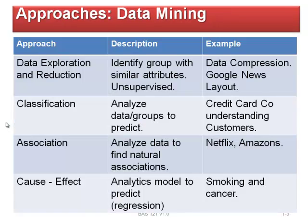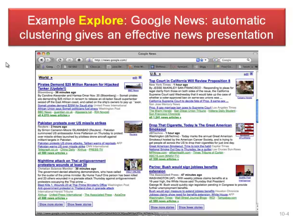Let's look at different approaches to data mining. The first approach is data exploration and reduction — we're exploring the data or finding ways to compress and reduce it. We're trying to identify groups with similar attributes. Normally it's putting the attributes on a grid, and the ones close to each other have similar attributes; we cluster them together. The ones far apart go in another cluster. It's called unsupervised because there's no dependent variable we're trying to solve. Examples include data compression and web layout — like Google News, which groups articles into world news, U.S., sports, etc.